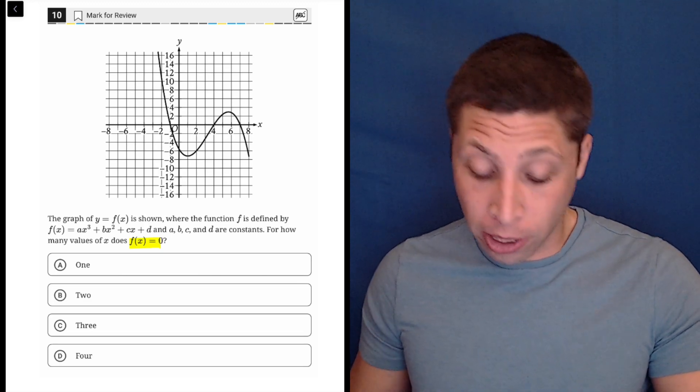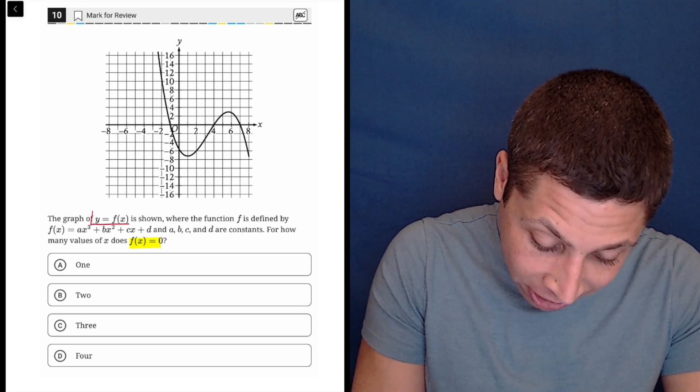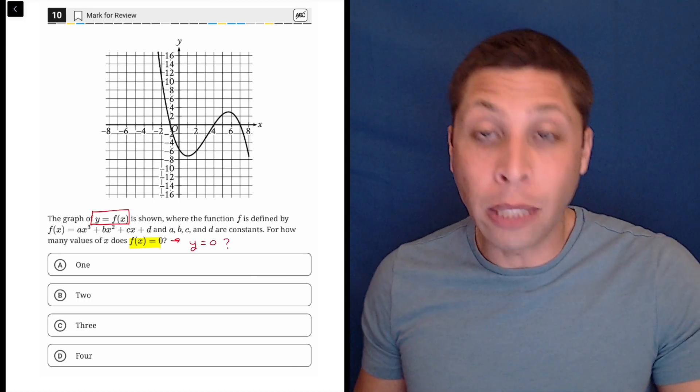Most of you should have at this point learned that f of x is equal to y. They kind of even just say it right here. So this is basically code for how often is y equal to 0?